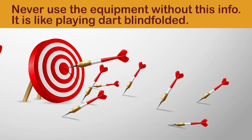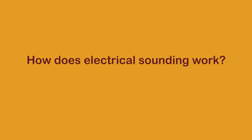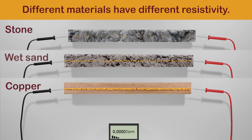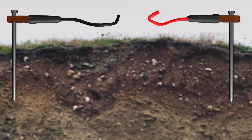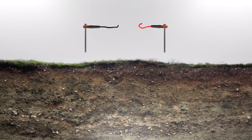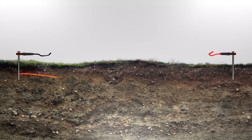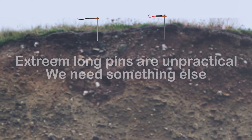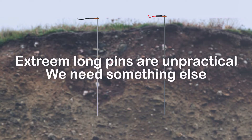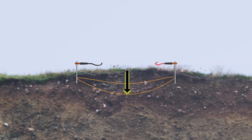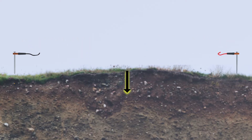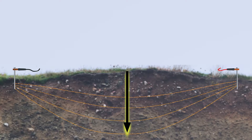How does electrical sounding work? Electricity travels easier through some types of materials than others. If we stick two pins in the ground and connect them to an electrical power supply, electricity will flow from one end to the other. How much electricity flows depends on the type of soil and how far the pins are apart. We can calculate soil resistivity by measuring voltage and amperage. To measure deep into the ground, we can't use very long pins of 60 meters, but luckily electricity applied on the surface travels in a ball shape through the ground — so if we put the pins further apart, the ball will be bigger and will reach deeper.